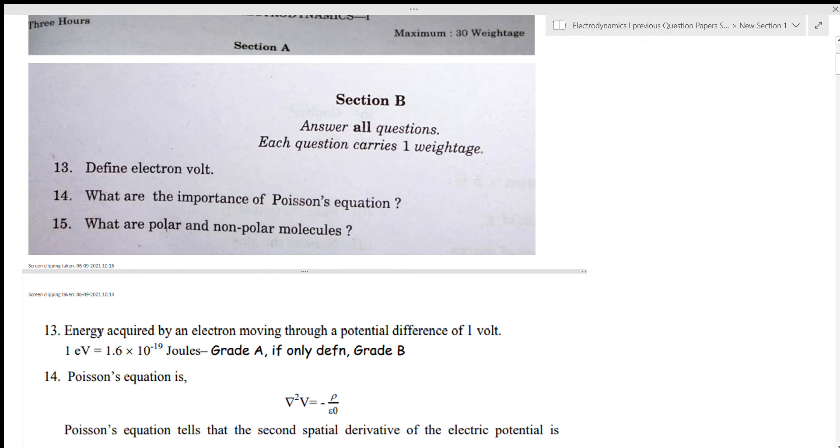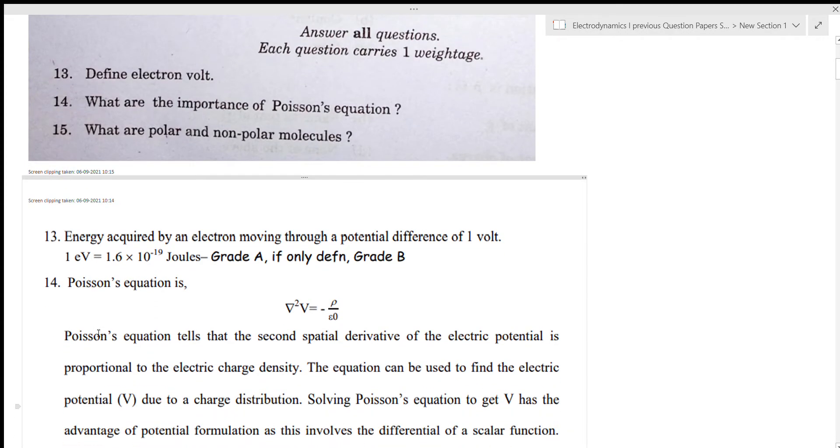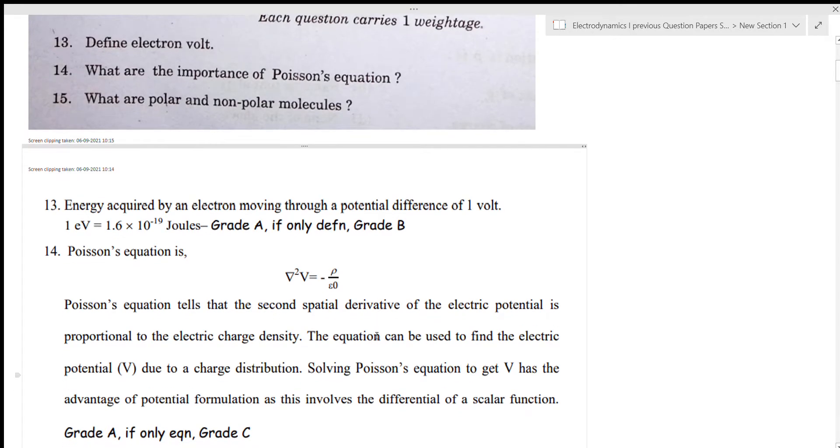Next question is the importance of Poisson's equation. Poisson's equation is del square V is equal to minus rho by epsilon zero. The potential is a scalar function. The potential is proportional to the charge density.